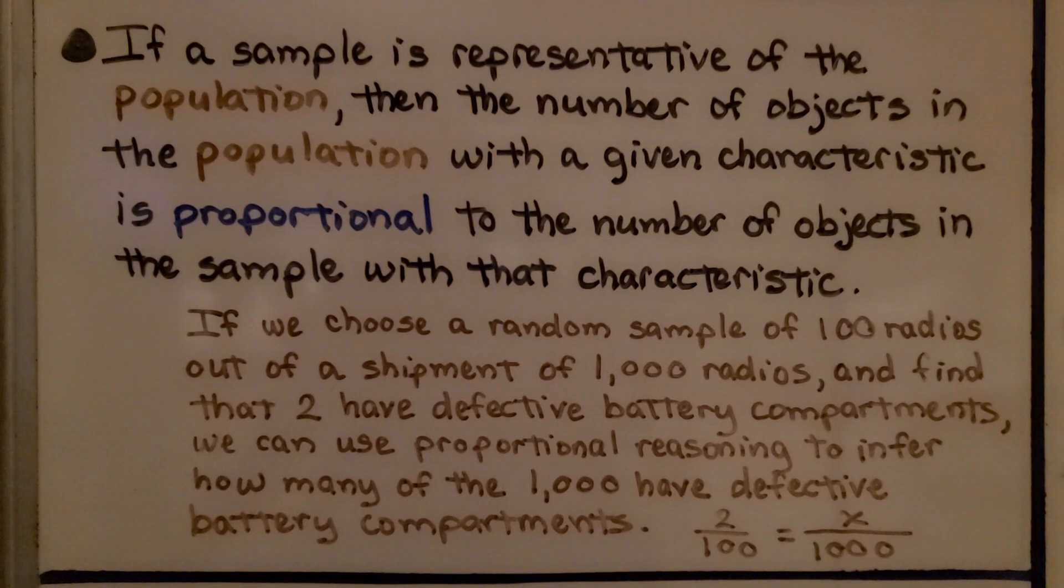What does that mean? Here's an example. If we choose a random sample of 100 radios out of a shipment of 1,000 radios and find that two have defective battery compartments, we can use proportional reasoning to infer how many of the 1,000 have defective battery compartments. If 2 out of 100 have defective battery compartments, then we can say x out of 1,000 will have defective battery compartments.